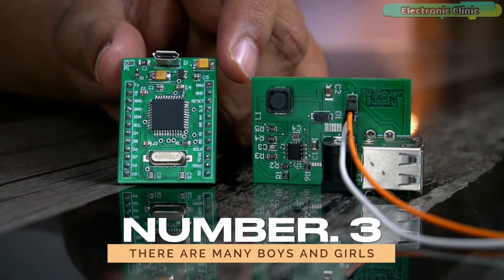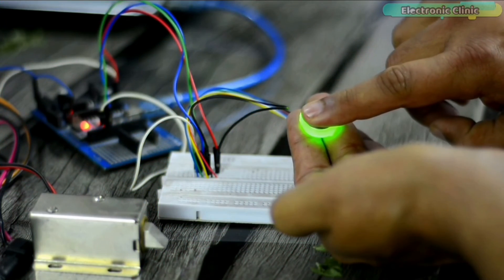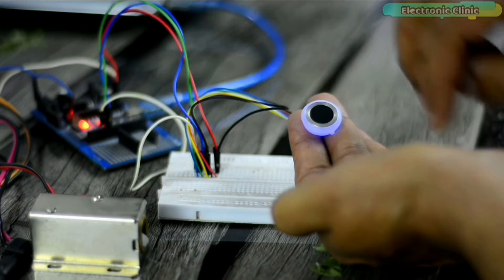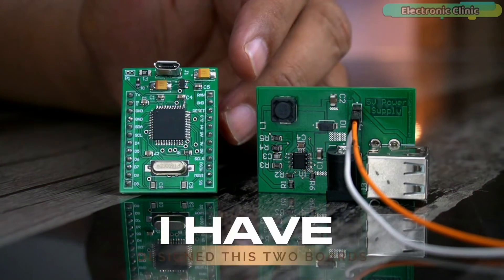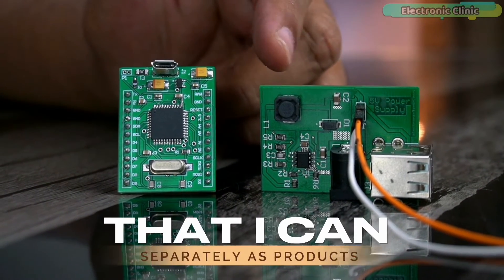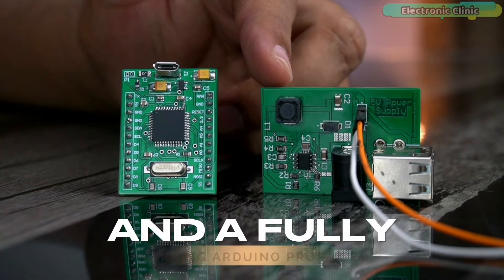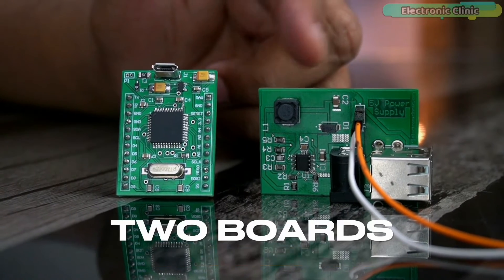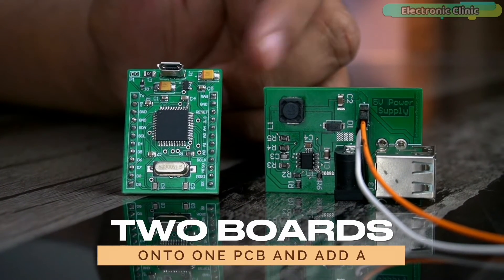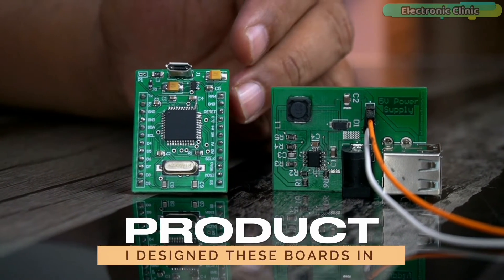Number three: there are many boys and girls who want to design their own products and don't want to use ready-made Arduino boards. For example, if you want to make a fingerprint based door lock product, you cannot just sell everything separately. You have to properly solder everything on a single PCB. I have designed these two boards that I can sell separately as products. It's a fully functional 5V 3A power supply and a fully working Arduino Pro Micro. If I solder the components of these two boards onto one PCB and add a fingerprint module, I can make a complete product. I designed these boards in Altium Designer.